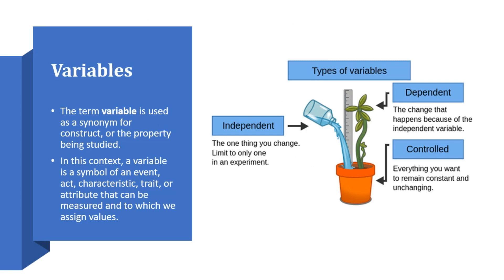The term variable is used as a synonym for construct or property being studied. In context, a variable is a symbol of event, act, characteristic, trait or attribute that can be measured and to which we assign a value. These variables are different in nature in research — they are independent, they are dependent, and sometimes they are controlled.